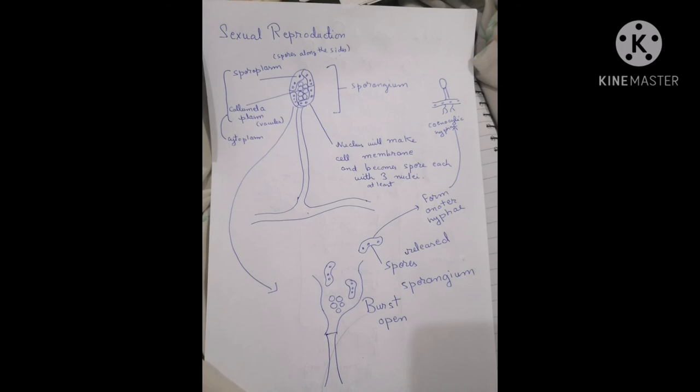These hyphae are coenocytic. What is coenocytic? They are actually non-septate. It means they are not divided into individual cells. They contain multi-nucleated cells with a single cytoplasm without division of septa.